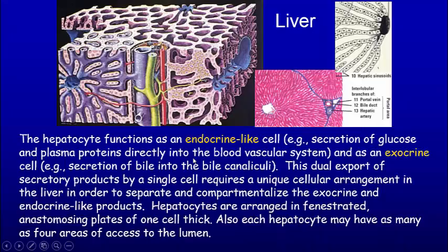Hepatocytes function both as endocrine cells because they secrete glucose and plasma proteins — including blood clotting factors — and as exocrine cells because they secrete bile into the bile canaliculus, the little projections on the side. So it produces things directly into the blood like endocrine, and also secretes things into a duct like exocrine.